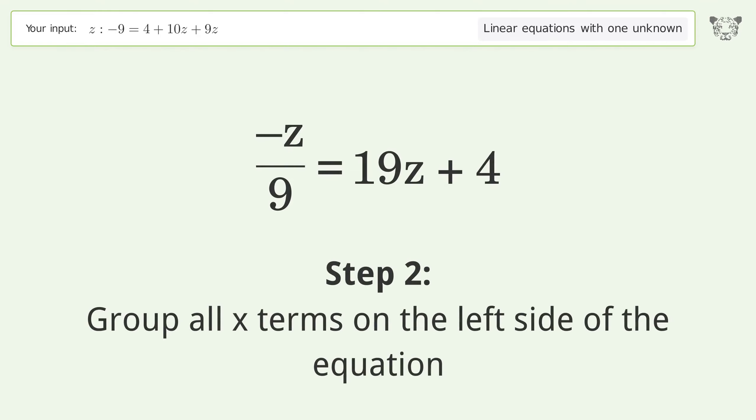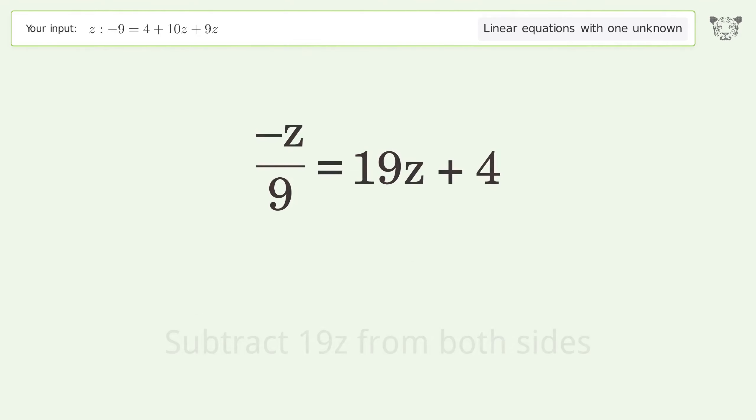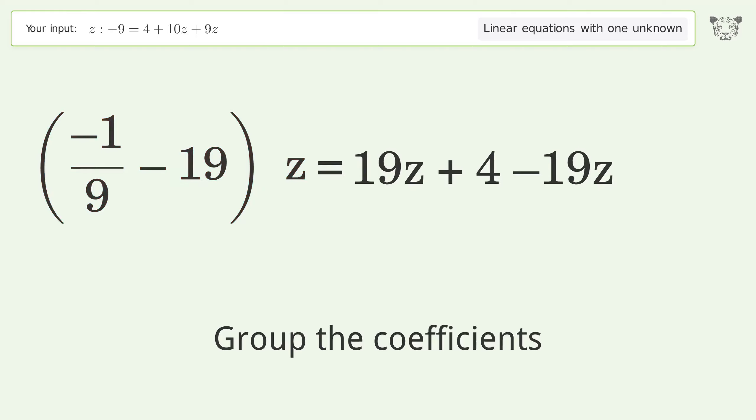Group all x terms on the left side of the equation. Subtract 19z from both sides. Group the coefficients. Convert the integer into a fraction.